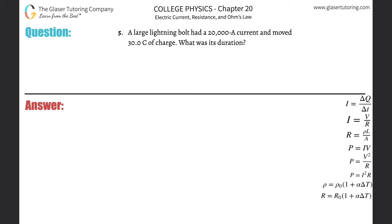Number five, a large lightning bolt had a 20,000 amp current and moved 30 coulombs of charge. What was its duration?